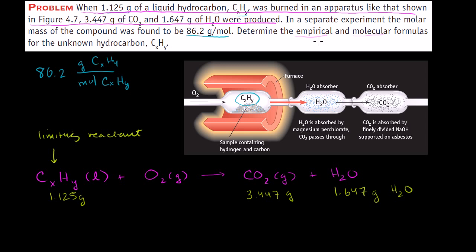As a refresher: empirical means just the simplest whole-number ratio of atoms in our molecule — so the simplest ratio of carbons to hydrogens gives us the empirical formula. The molecular formula is exactly how many carbons and hydrogens are in each molecule. We'll use the empirical formula along with the molar mass to figure out the actual molecular formula.